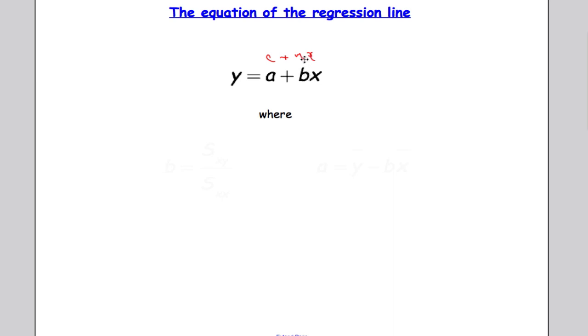Where c is the y intercept, where it crosses the y axis. And b will be the gradient of the line. So to get the gradient of the line we're going to do sxy divided by sxx. And that will give us the gradient we're looking for. And to get the y intercept we're going to do y bar minus b times x bar.